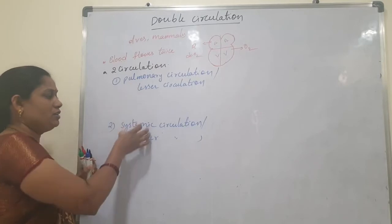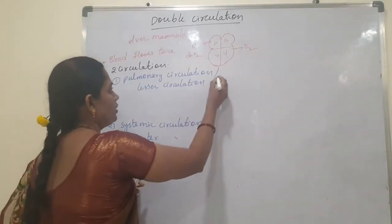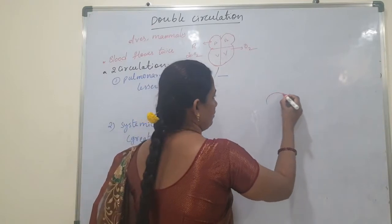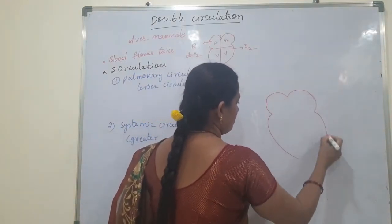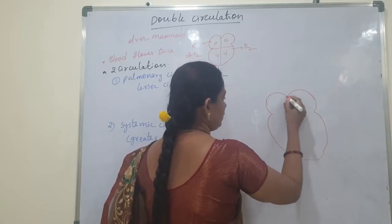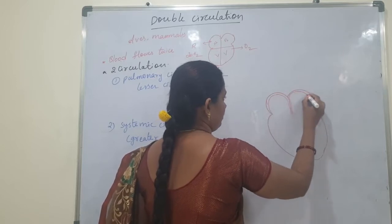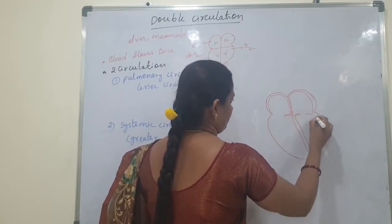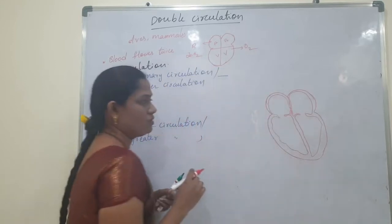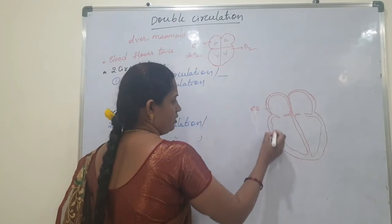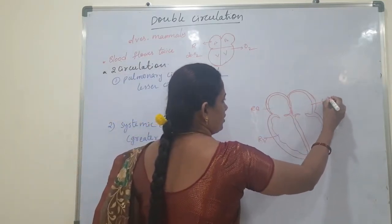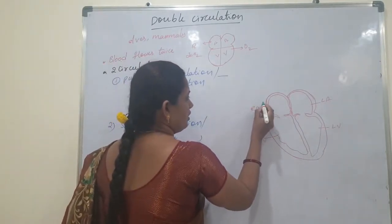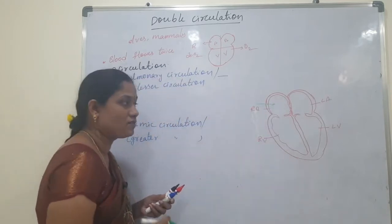We will now see pulmonary and systemic circulation. In pulmonary circulation, the right atria receives deoxygenated blood.